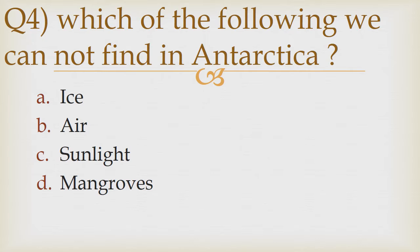Question number 4. Which of the following we cannot find in Antarctica? Option A: Ice. Option B: Air. Option C: Sunlight. Option D: Mangroves. The correct answer is Option D — Mangroves.